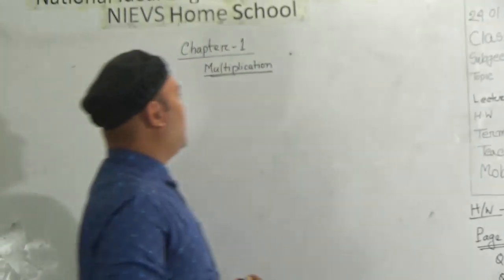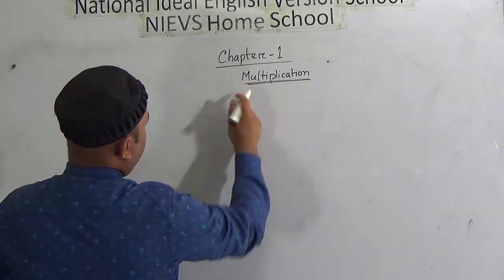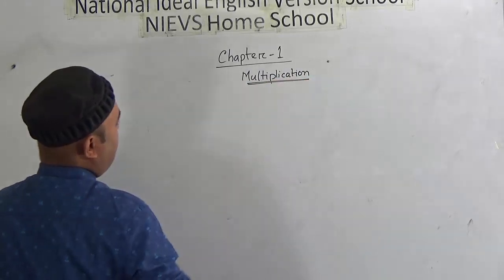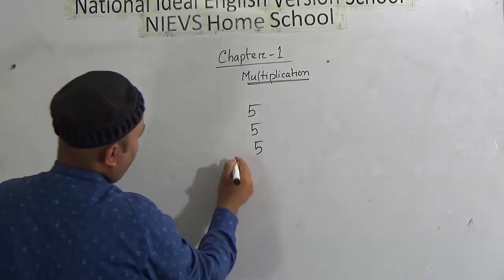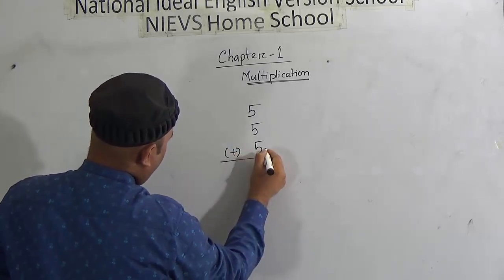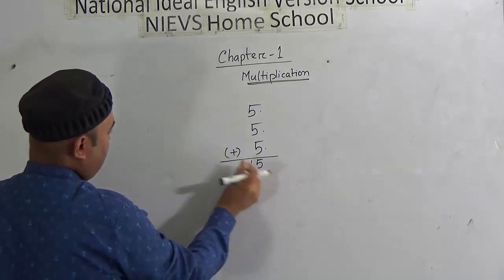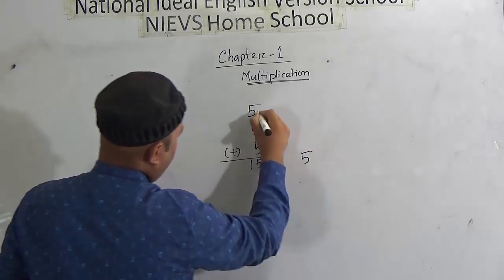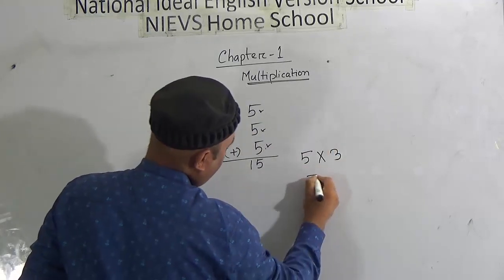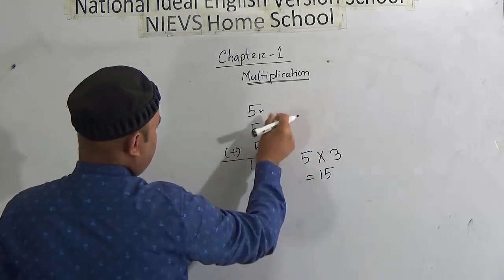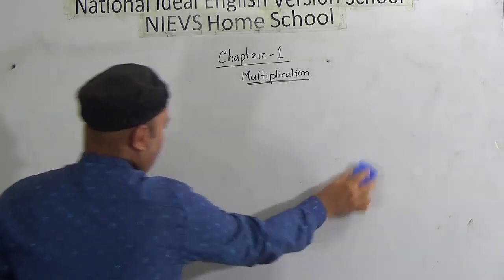Our first chapter is multiplication. Multiplication means the short form of summation. If I write here 5, 5, 5 — how many 5s are here? There are three 5s. If we add them: 5 and 5 is 10, and 10 and 5 is 15, so the summation will be 15. But in short, if there are three 5s, we write 5 multiplied by 3, which makes 15. So multiplication is the short form of summation.